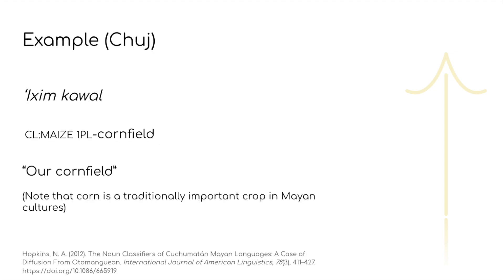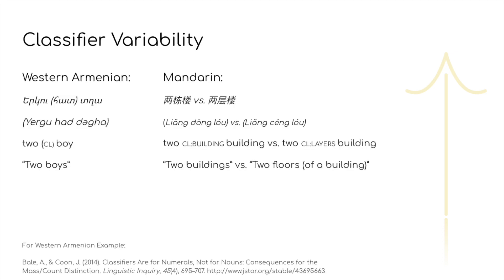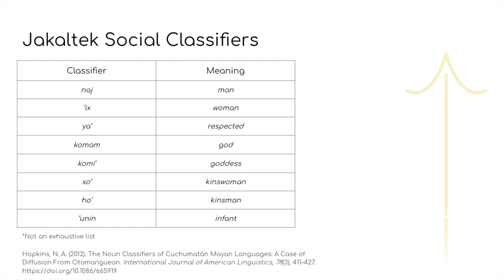Some culturally important concepts will also often have their own classifiers. Some nouns may not occur with classifiers, and some may also be used with a variety of different classifiers, which can alter the exact semantics of the noun phrase. They can often have a pragmatic role as well, which can be seen in the many different human classifiers in some Mayan languages used for different social situations.